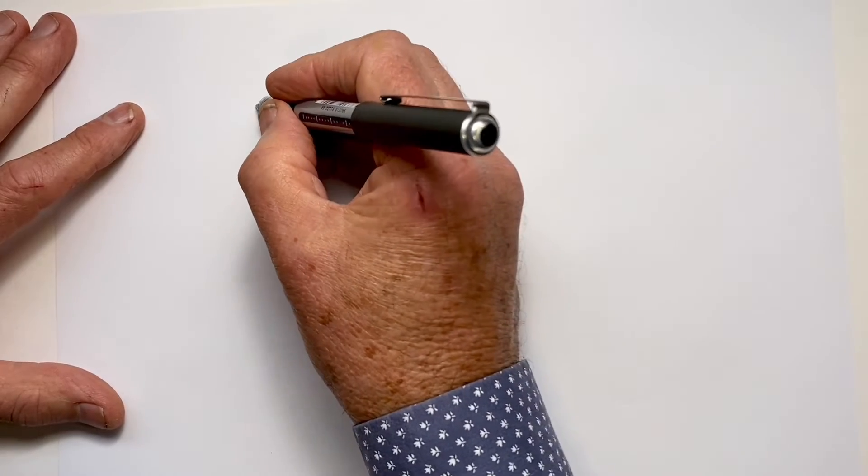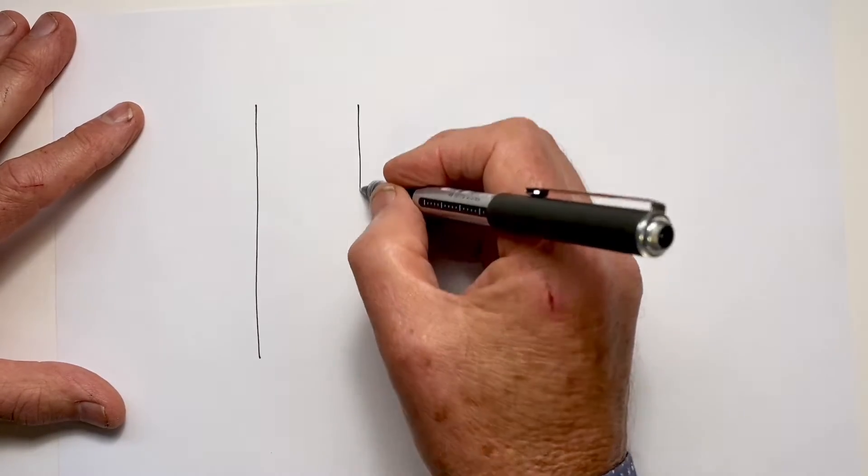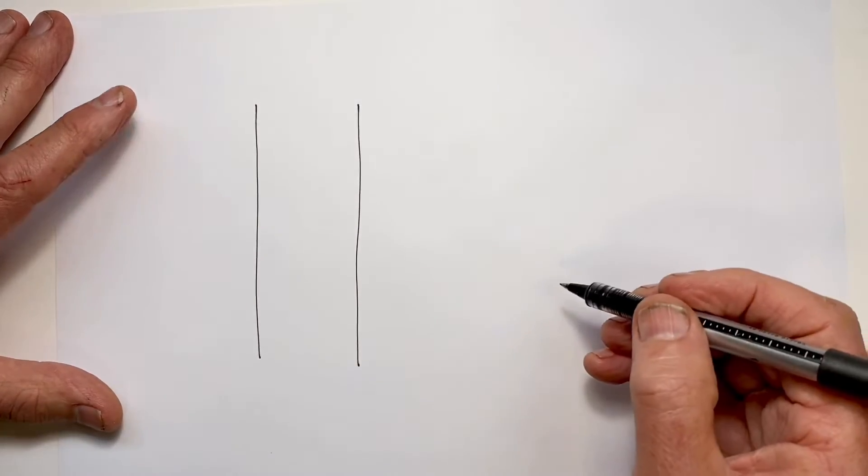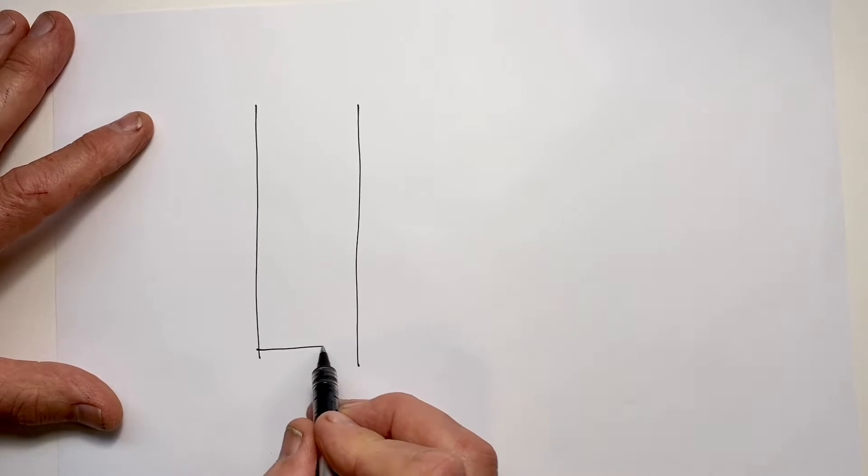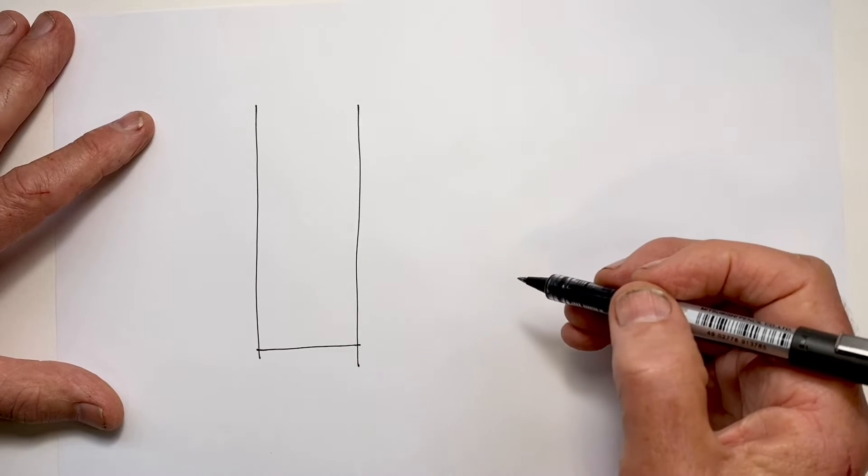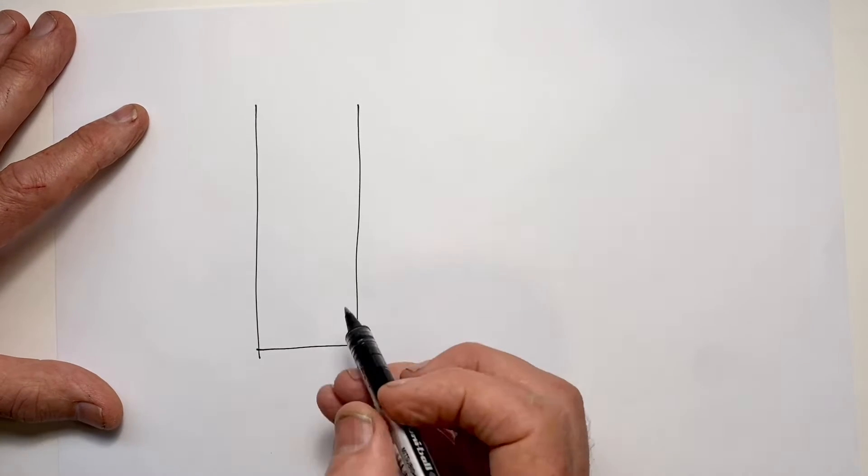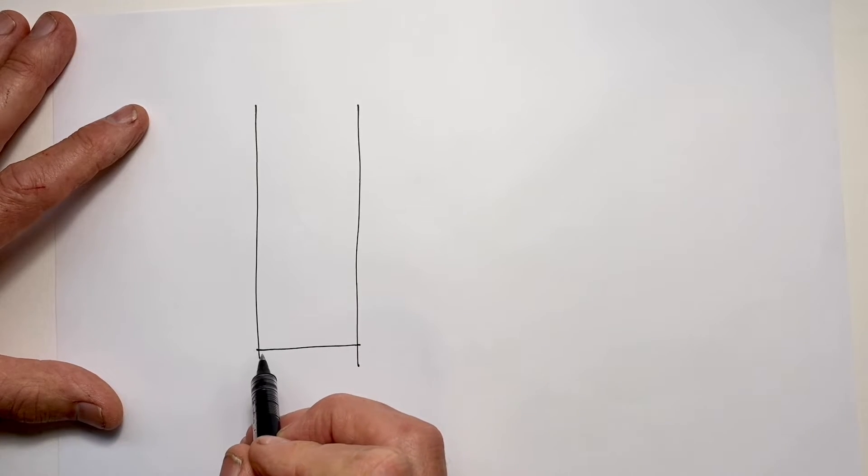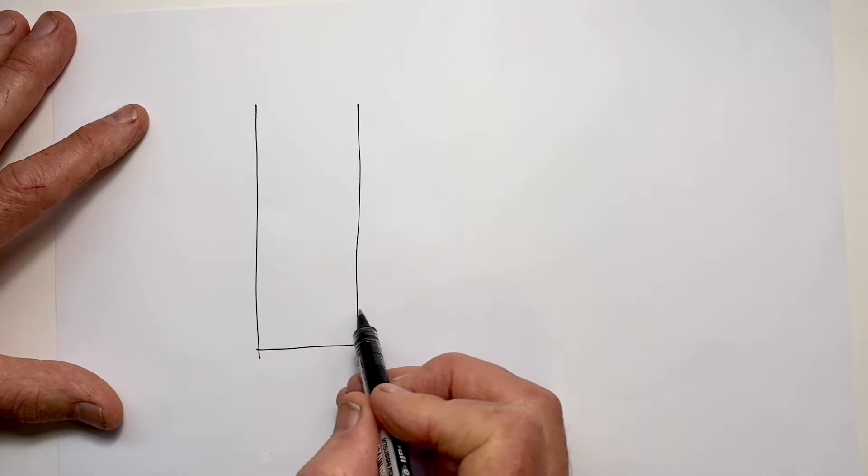This next exercise may not seem as obvious. Draw two parallel lines and draw a line straight across the bottom. In all these, we also practice starting and ending our lines at precise points. Next, we draw a line that's not parallel to this one and angles slightly up.